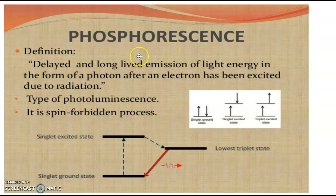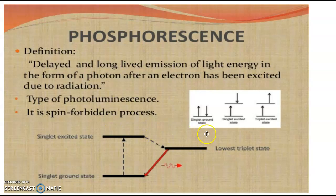Next, we come to phosphorescence. It is nothing but delayed and long-lived emission of light energy in the form of a photon after an electron has been excited due to radiation. It is also called delayed fluorescence. As a type of photoluminescence, it is a spin-forbidden process — forbidden meaning not allowed. In the singlet ground state, electrons have opposite spin. In the singlet excited state, one electron is excited to the higher energy state. In the triplet excited state, the spin is changed in the higher energy state, so electrons having the same spin are present.